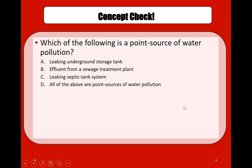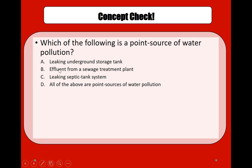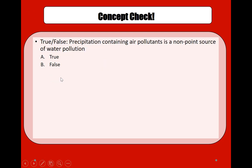Concept check: Which of the following is a point source of water pollution — a leaking underground storage tank, effluent from a sewage treatment plant, a leaking septic tank system, or all of the above? The answer is D — all of the above are point sources of water pollution because they can all be clearly identified.